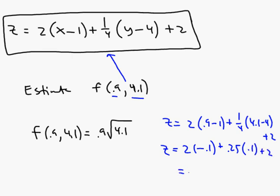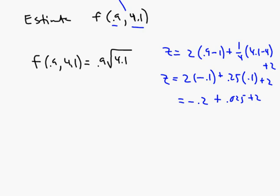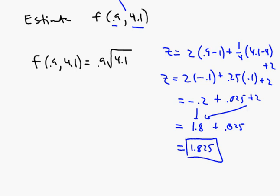We compute: z equals 2 times 0.9 minus 1 plus one-fourth times 4.1 minus 4 plus 2, which gives 2 times negative 0.1 plus 0.25 times 0.1 plus 2, equaling negative 0.2 plus 0.025 plus 2, or approximately 1.825. You get a pretty good estimate without knowing the square root of 4.1 in your head.